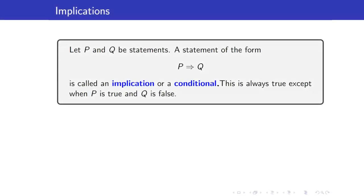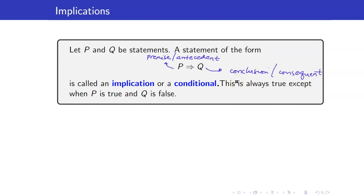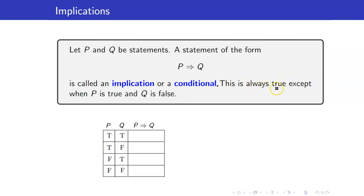Let P and Q be statements. A statement of the form P implies Q is called an implication or a conditional. This is always true except when P is true and Q is false. You call this part your premise or antecedent, and you call this your conclusion or consequent. Let us construct the truth table. When P is true and Q is false, the implication is false. But for the rest, it is always true. A conditional is false when the premise is true but the conclusion is false.